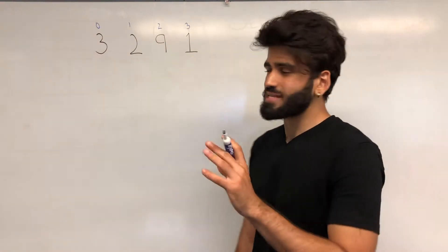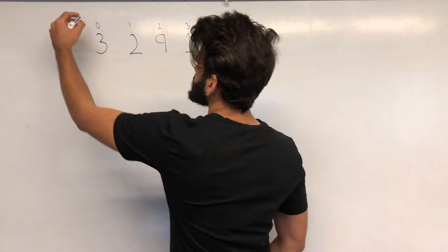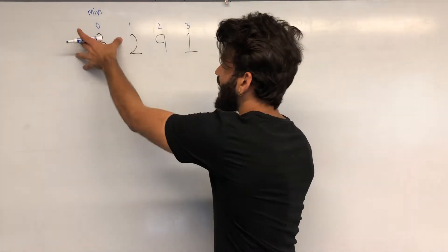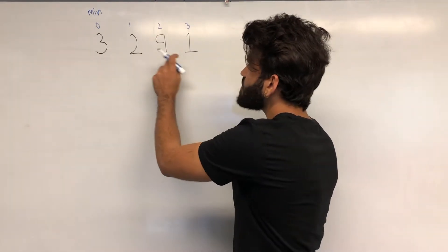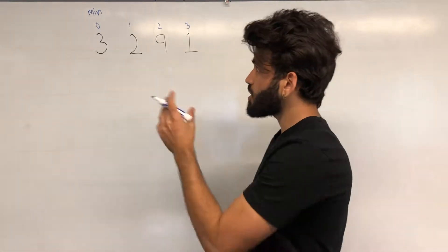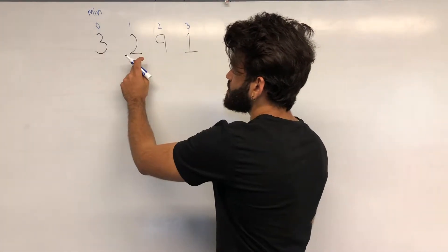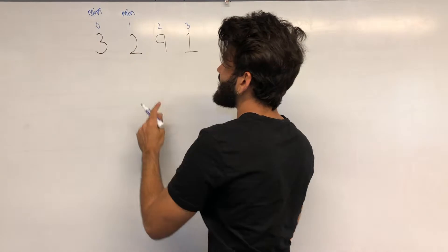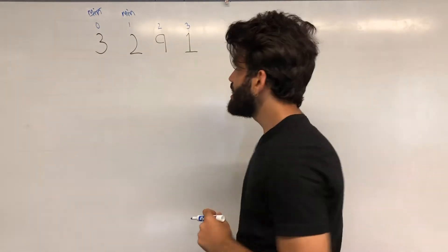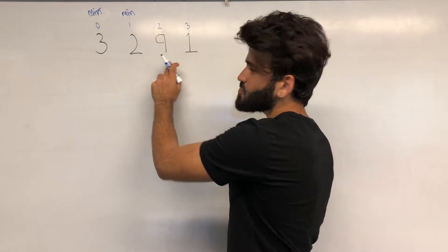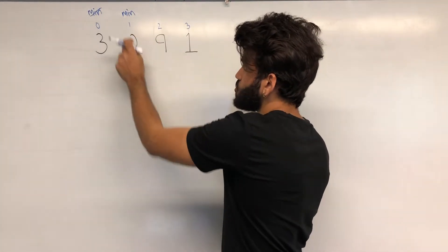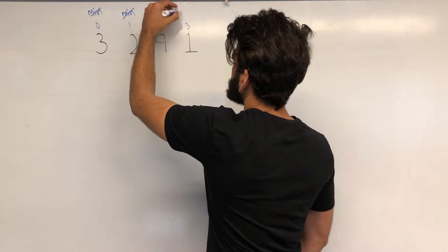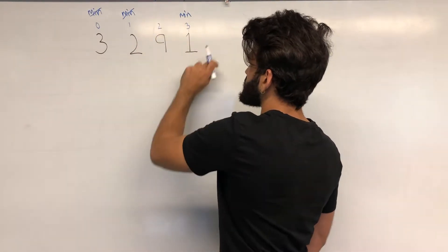Selection Sort starts from the beginning of the list and assigns the first element's position as the minimum. Once we have this as the minimum, we go through each and every other element in the list and compare it with our current minimum. We check: is 3 smaller than 2? No, it's not. So 2 should be the minimum — we reassign the minimum index to the position of 2. Then we go to the next element: is 9 less than 2? No. Is 1 less than 2? Yes. So in this iteration, the minimum index and minimum value is at index 3, which is the value 1.